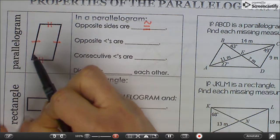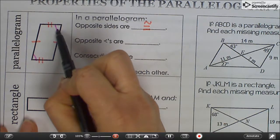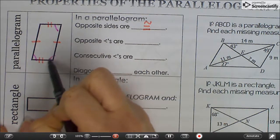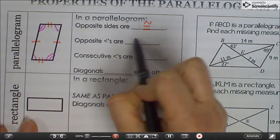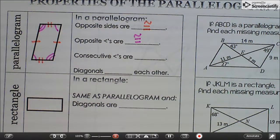Opposite angles, so this angle and that angle, this angle and that angle, are also congruent. So opposite sides are congruent, opposite angles are congruent.